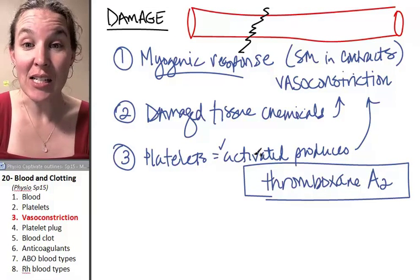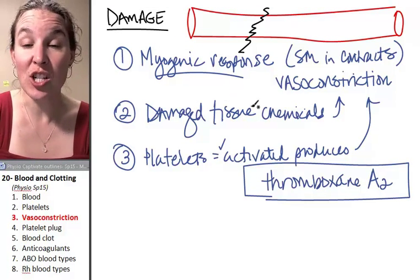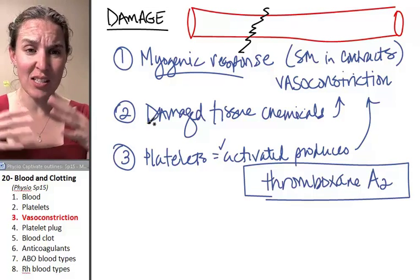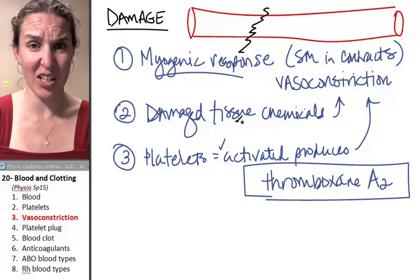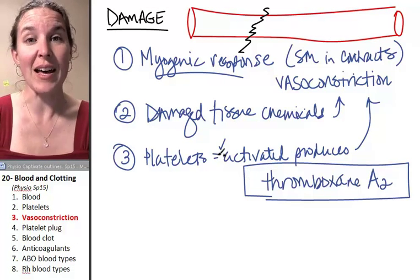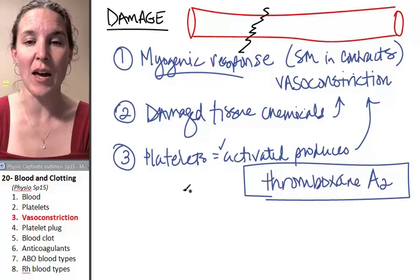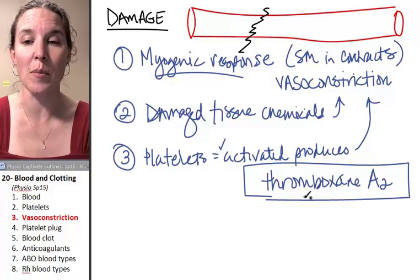Platelets activate when damaged tissue sends out messages that say, oh God, this is not good, we need some help over here. That's going to activate the platelets. We're going to talk about that in a second because that's how you form a platelet plug.